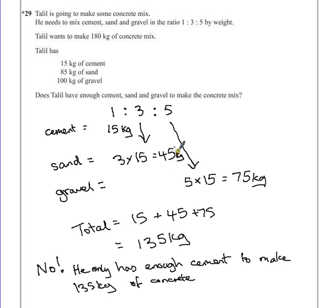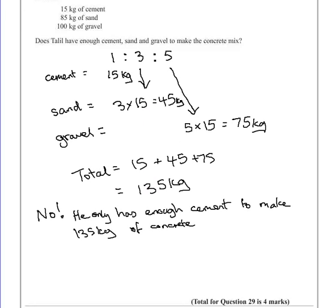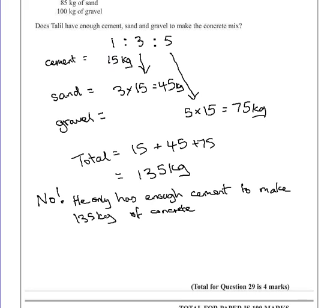He's got left over sand because he's got another 40 kilograms there. He's got another 25 kilograms of gravel. But he doesn't have any more cement. So to keep this ratio the same, he hasn't got enough. And that is a clear enough explanation to give us our four marks.